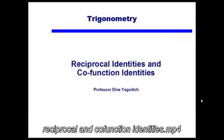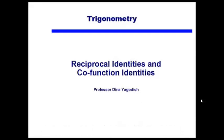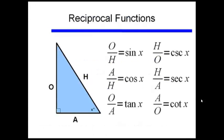This video is going to talk about the reciprocal identities and the co-function identities. We recall our original six trigonometric functions: sine x, cosine x, tangent x, cosecant, secant, and cotangent of x. Sine and cosecant, cosine and secant, and tangent and cotangent were reciprocal functions of each other. That is, sine of x equals 1 over cosecant x, cosine of x equals 1 over secant of x, and tangent of x equals 1 divided by cotangent of x.